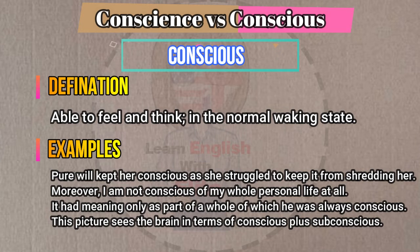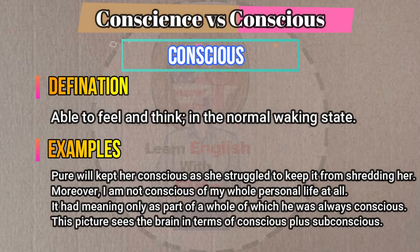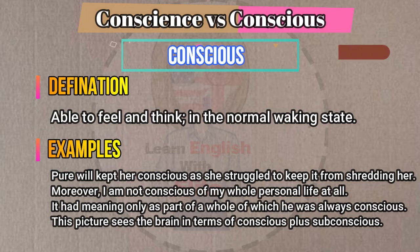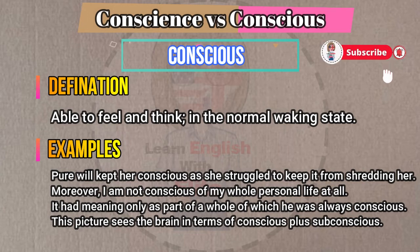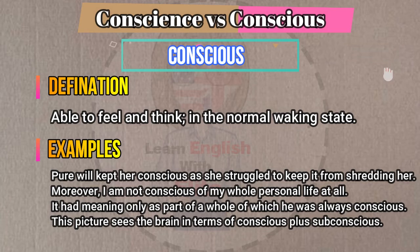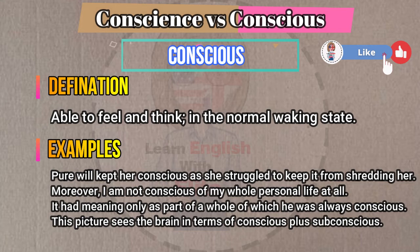And now let me show examples of the word conscious in sentences. Pure will kept her conscious as she struggled to keep it from shredding her. Moreover, I am not conscious of my whole personal life at all — it had meaning only as part of a whole of which he was always conscious. This picture sees the brain in terms of conscious plus subconscious.